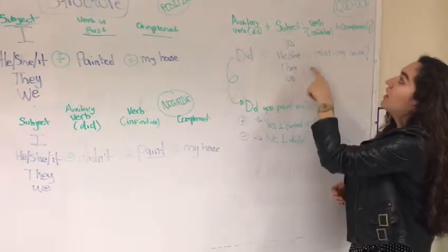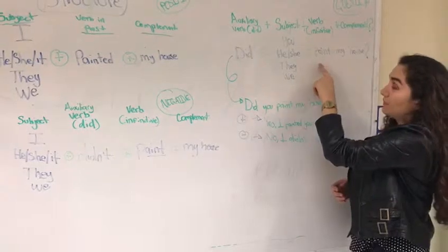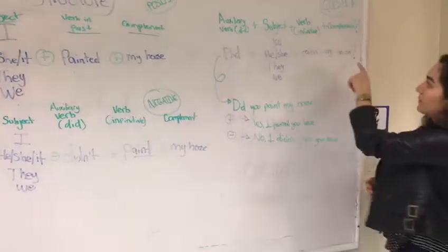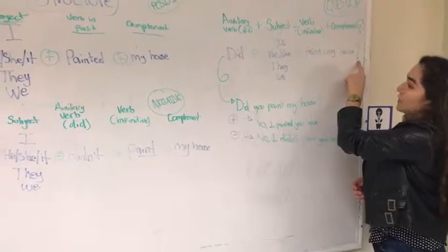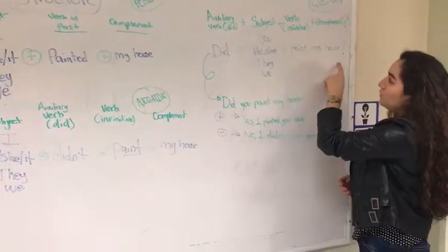Then we have the subject, and then the verb in infinitive, then the complement, and obviously the question mark. Did you paint my house?